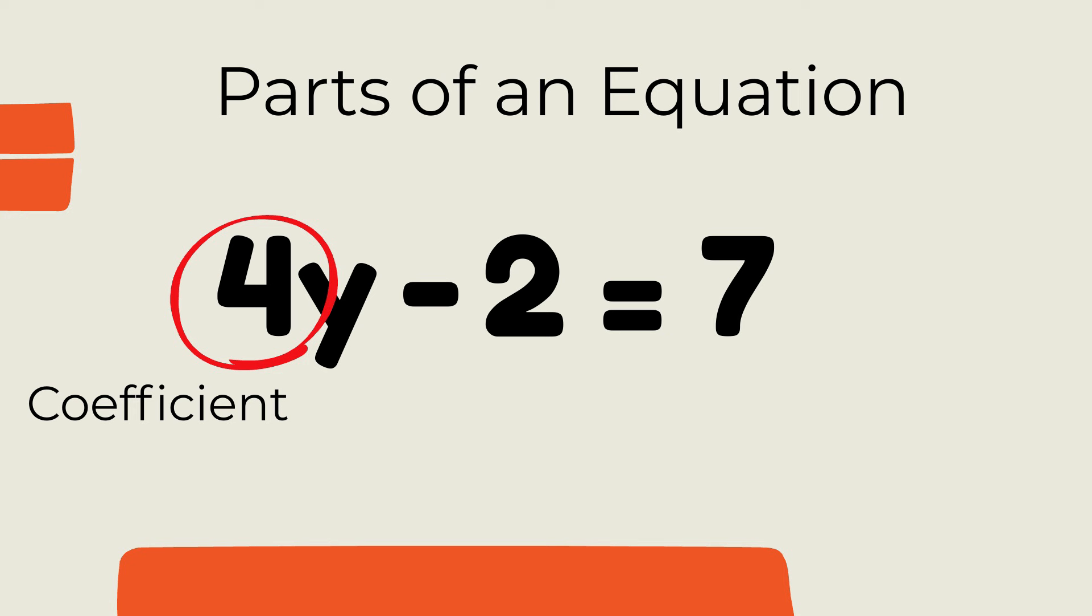The 4 is the coefficient. The coefficient will be found in front of a variable, and it tells you how many times the variable is multiplied. In this example, it is 4 times y.